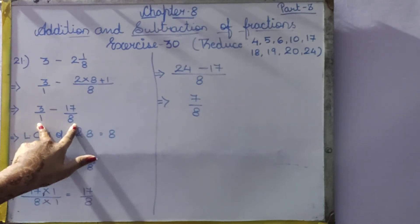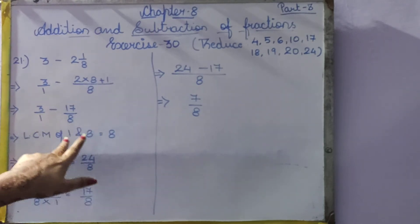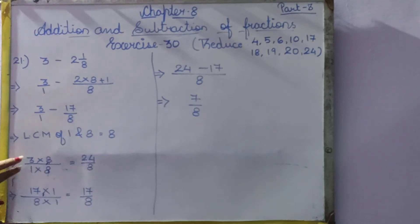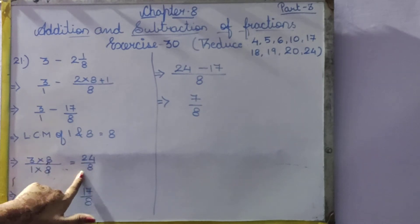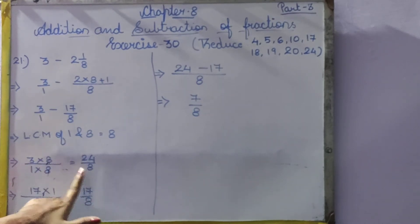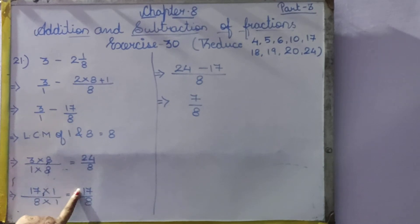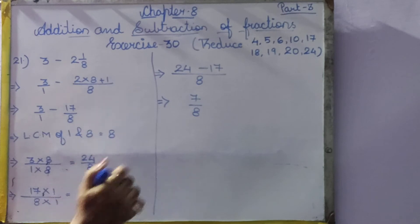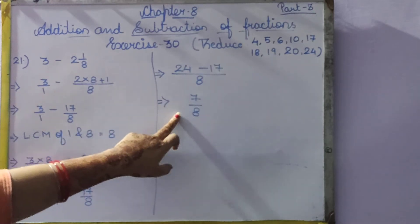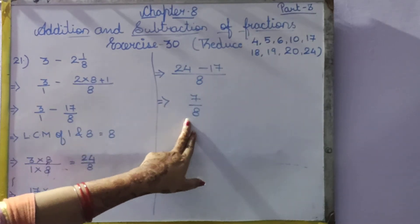So 1 and 8 are both different denominators. We take out the LCM of 1 and 8, which will be 8. Now we make an equal denominator. 3 by 1 becomes 24 by 8, and 17 by 8 stays as 17 by 8. So we have got the same denominator as 8. 24 minus 17 will be 7. So 7 by 8 will be our answer.